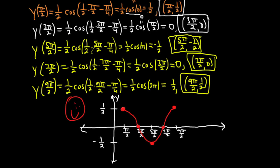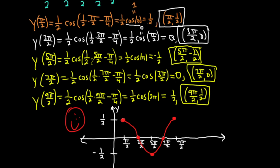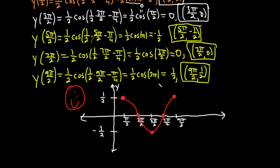That's how you graph a cosine function. Hopefully this has helped someone. This video ended up being over 14 minutes — I felt like I rushed through a lot of the computations, but the key values all come from the unit circle. Good luck.